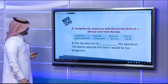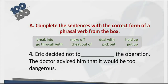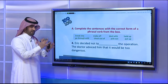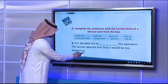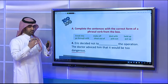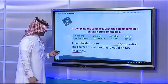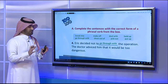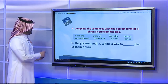Sentence four: 'Eric decided not to ___ the operation the doctor advised, as it would be too dangerous.' Eric was supposed to have an operation, but the doctor said it's too dangerous. Eric decided not to stay with the plan, so the answer is 'go through with' — he decided not to go through with the operation.